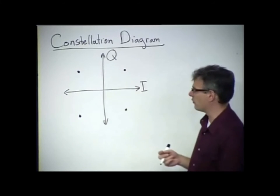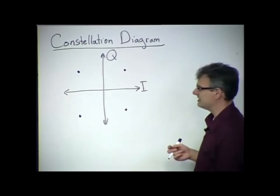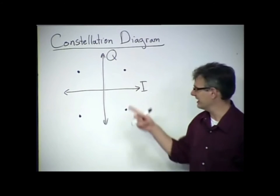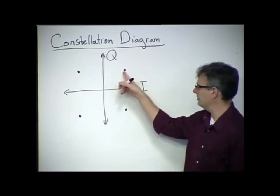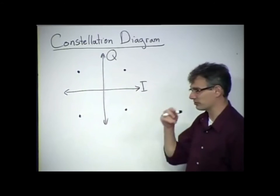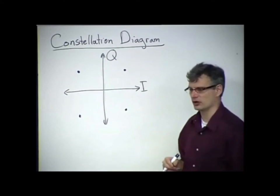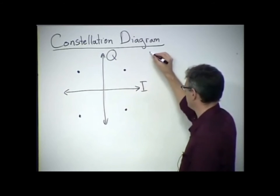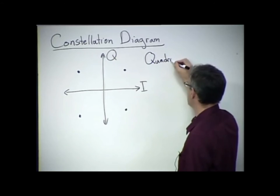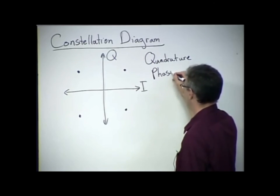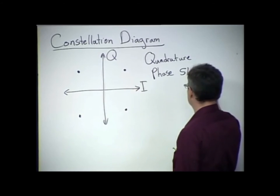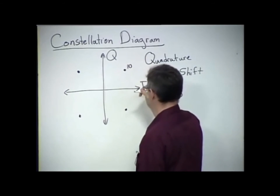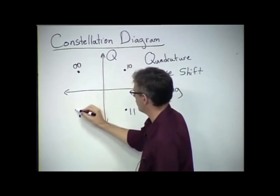With four constellation points, you're sending two bits per symbol period. Each point represents two bits: for example, 1-1, 1-0, 0-0, 0-1. This particular four-point constellation is called quadrature phase shift keying, QPSK. Assigning, for example, 1-0 to the upper-right quadrant, 1-1 to the upper-left, 0-0 to the lower-left, and 0-1 to the lower-right, the bit assignments are gray-coded: adjacent symbols differ by only one bit.